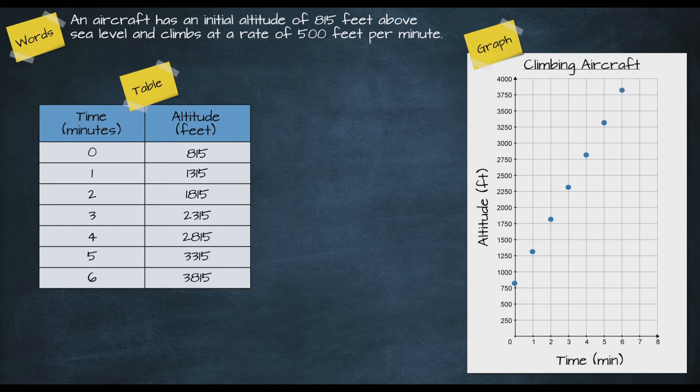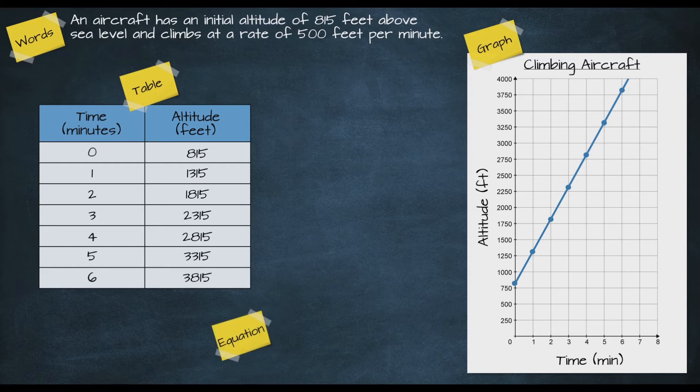Continuing to follow this pattern gives us several more points on the graph, and we can draw a straight line through all of these points to model our continuously changing altitude.